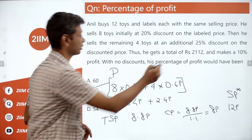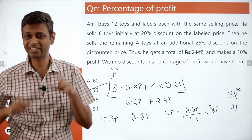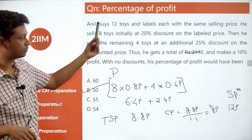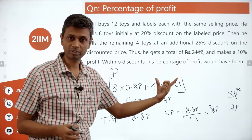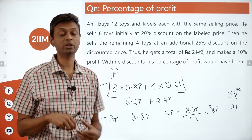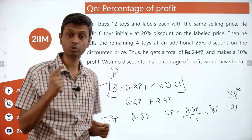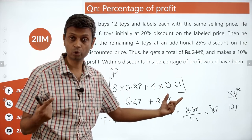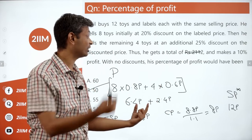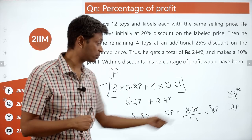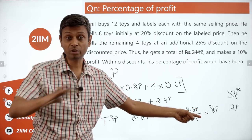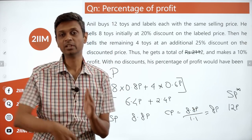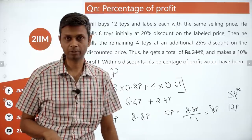We don't even need the 2112 figure — it's there to distract. Key steps: 20% discount → 0.8P, further 25% discount → 0.6P, total 8.8P = 1.1× cost, so cost = 8P. Without discounts, revenue = 12P, profit percentage = 4P/8P = 50%.